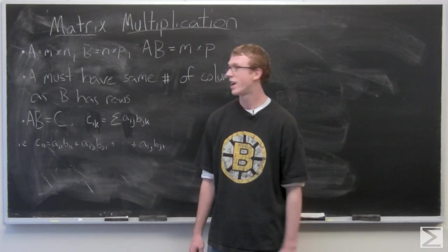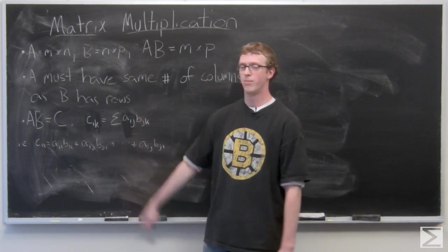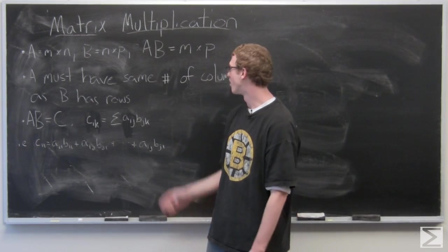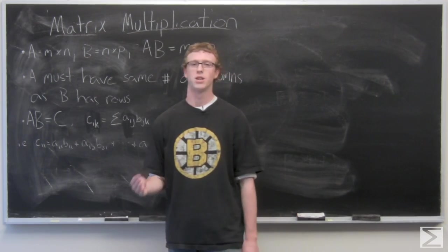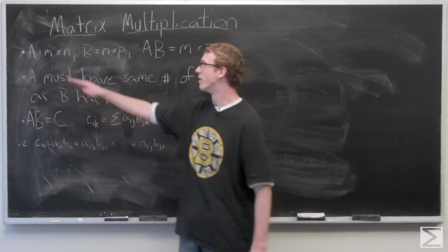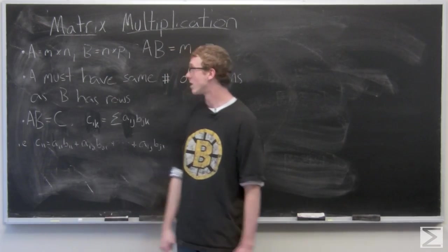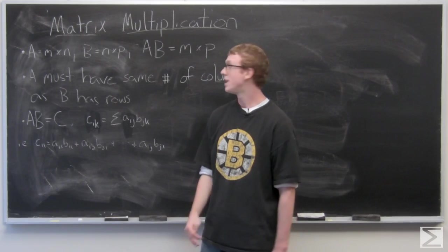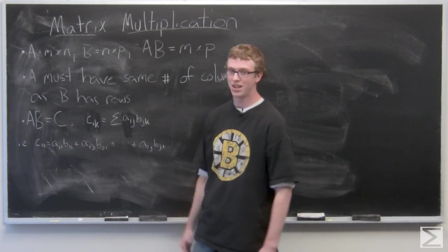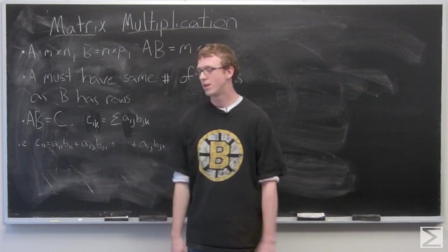Matrix multiplication has to be done with matrices where the first matrix must have the same number of rows as the second matrix does columns. So if we have A as an M by N matrix and B as an N by P matrix, AB is going to result in an M by P matrix.